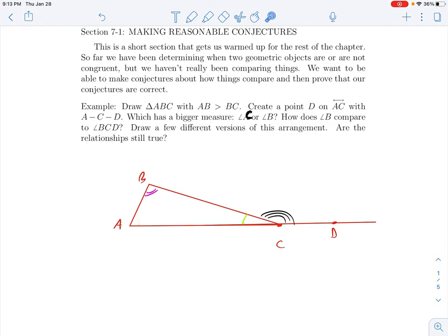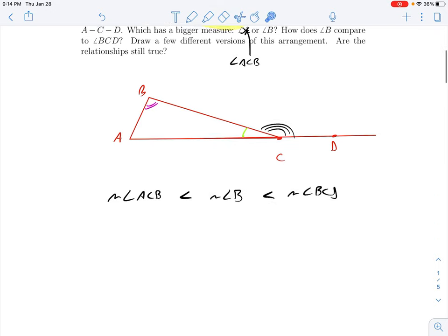And we'll compare angle BCD to angle B. I apologize, I really shouldn't call it angle C. I should call it angle ACB. So what you'll probably notice here is that the measure of angle ACB is smaller than the measure of B. And that appears to be smaller than the measure of angle BCD. And what I'll tell you is even if you drew this differently with a different shaped triangle, as long as you start with this relationship that AB is longer than BC, and that A, C, and D are all on the same line like this, you'll always get this.